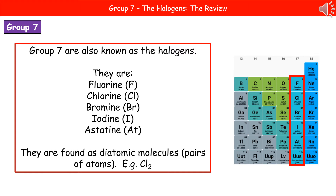A key point to remember when using halogens in any symbol equation is that they go around as what's called a diatomic molecule, meaning the atoms go around as a pair joined together. When writing the symbol for any halogen, you must write the chemical formula — F, Cl, Br, I, At — and then put the little subscript 2 on the right-hand side, because that tells us there are two atoms joined together.